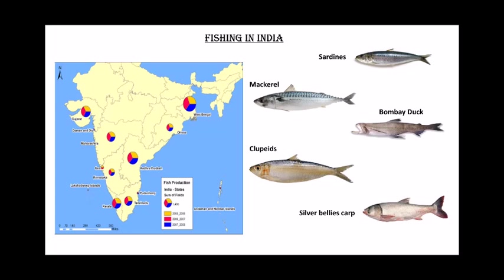Fishing also helps in raising the nutritional level and earning foreign exchange. Fish forms an important part of the diet in coastal regions — states like Kerala, West Bengal, Orissa, Andhra Pradesh, Tamil Nadu, Goa, and Maharashtra. India has about 7,500 kilometers of coastline, with marine fishing accounting for about 40% of the total annual production.